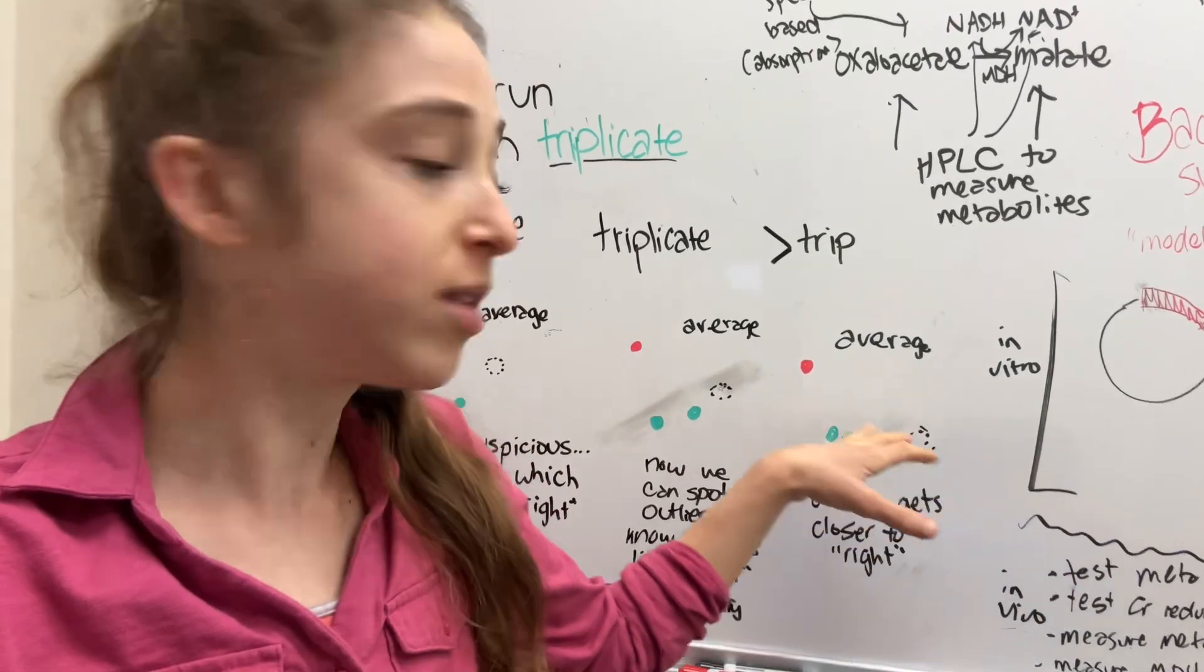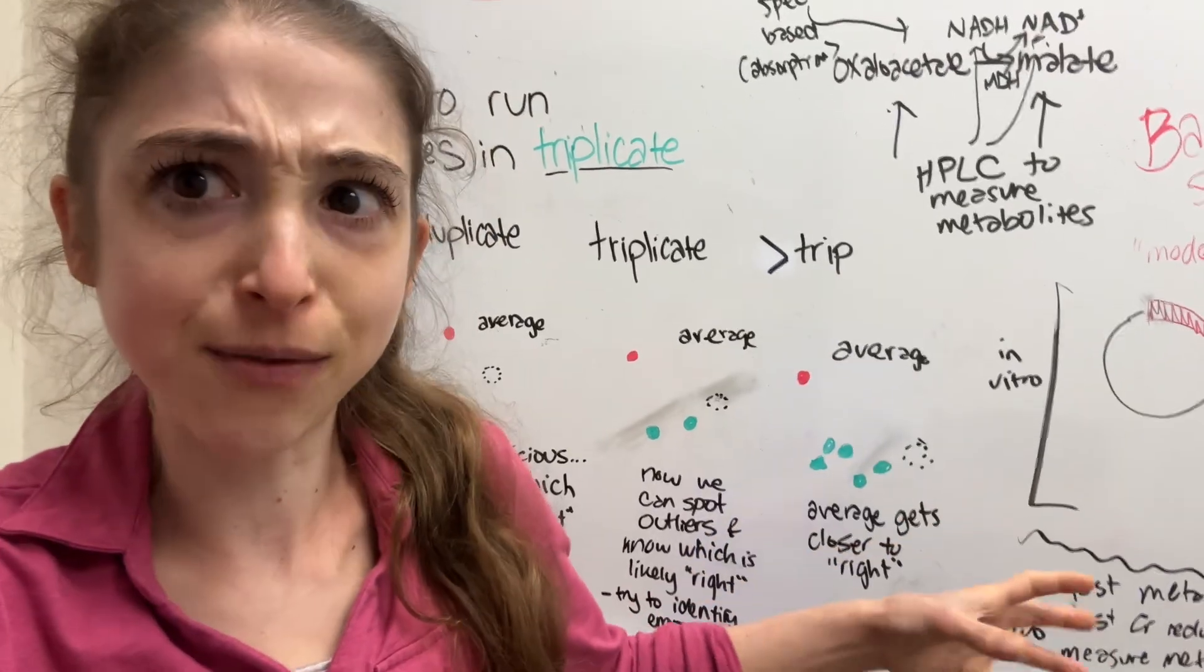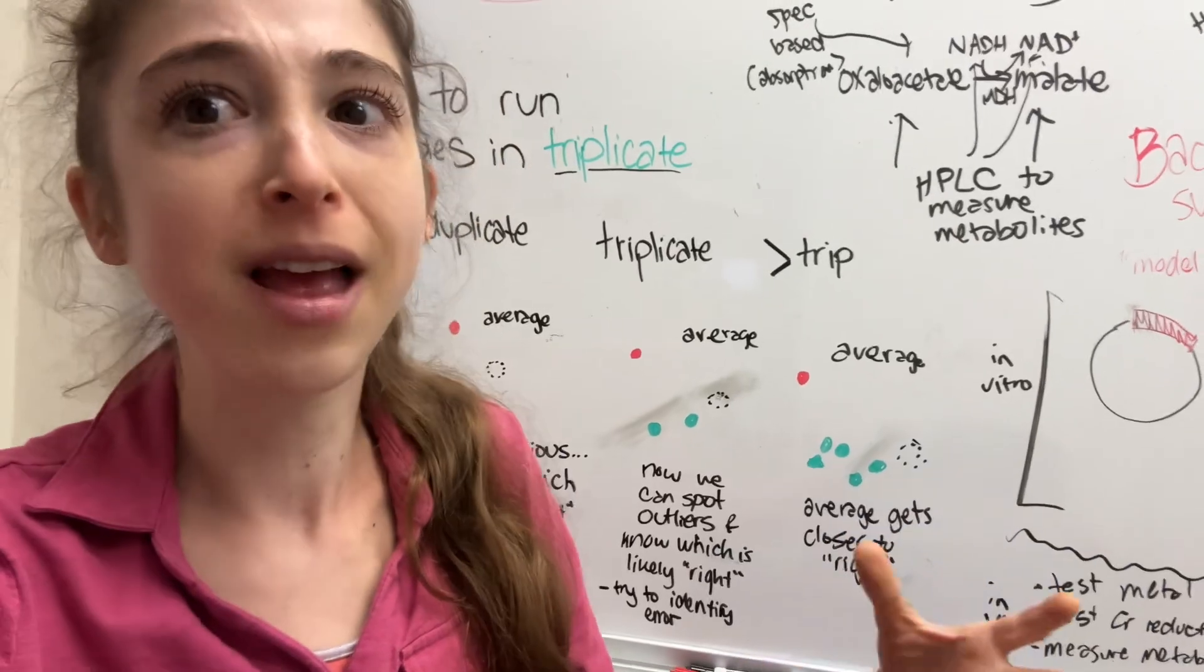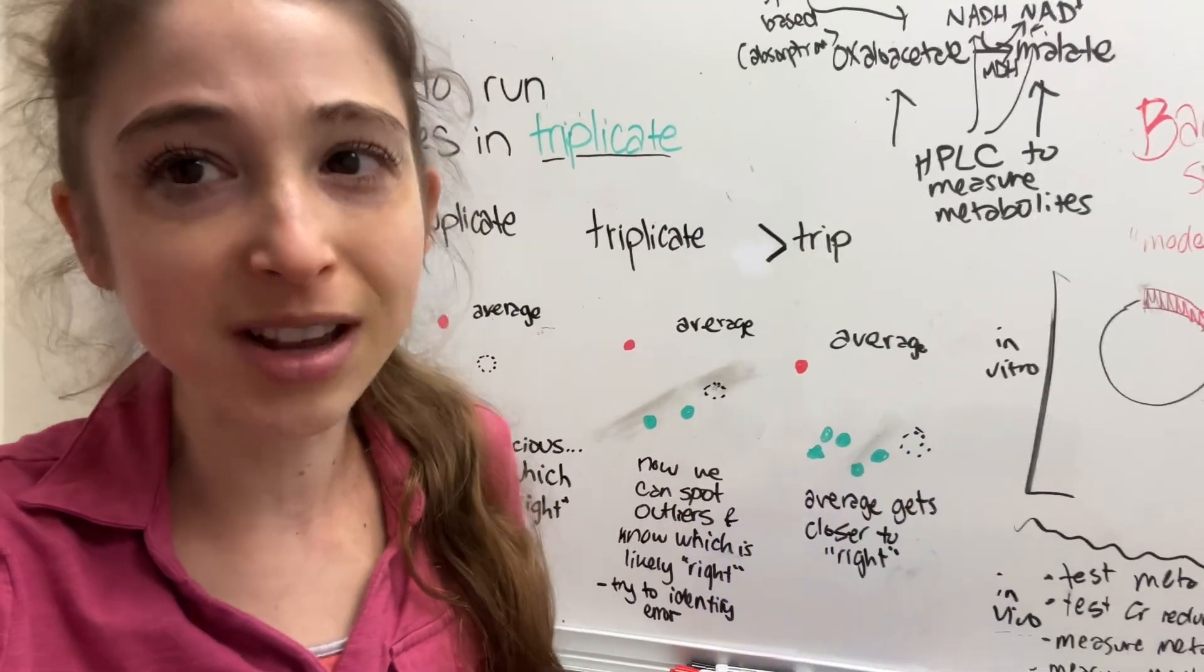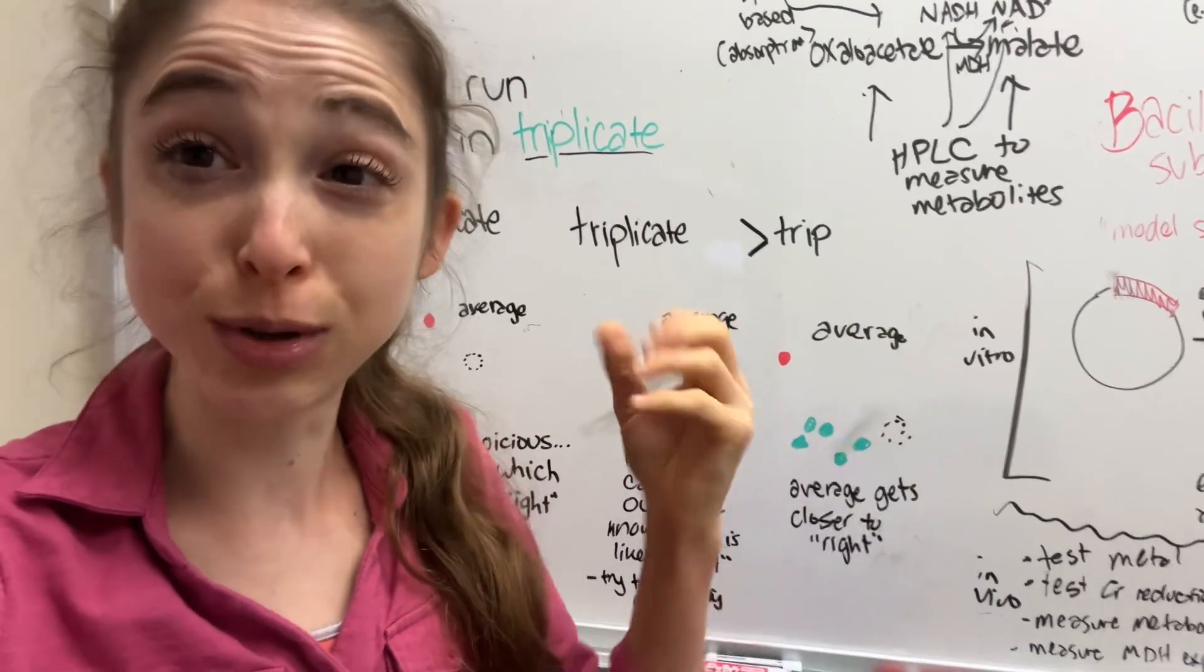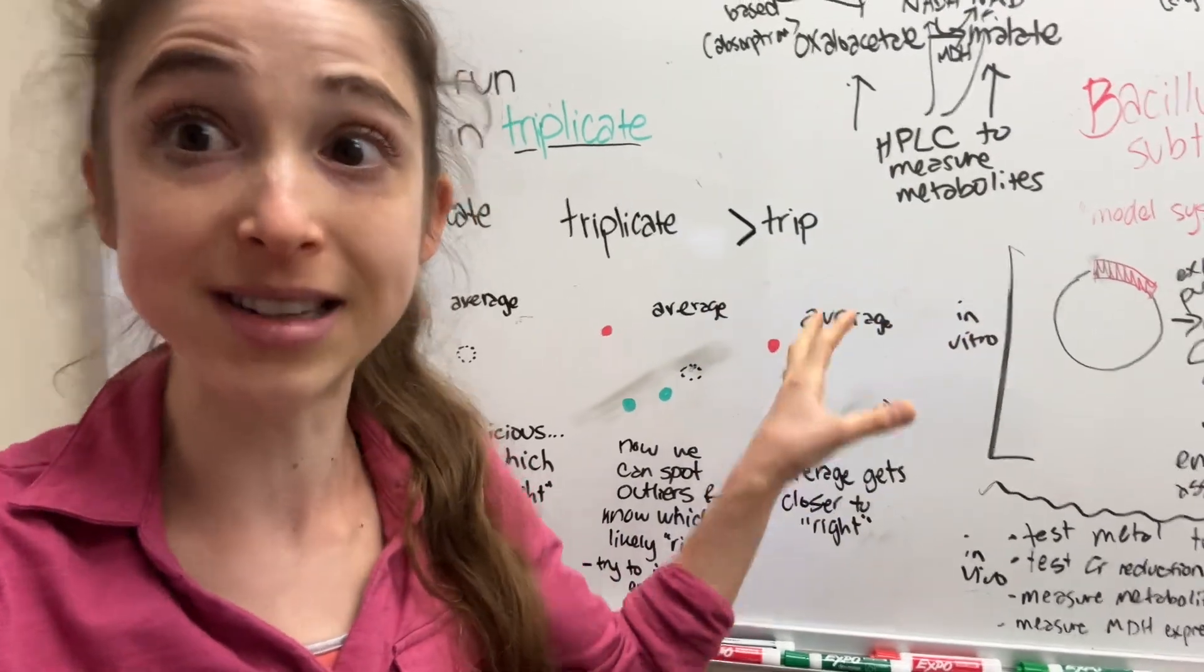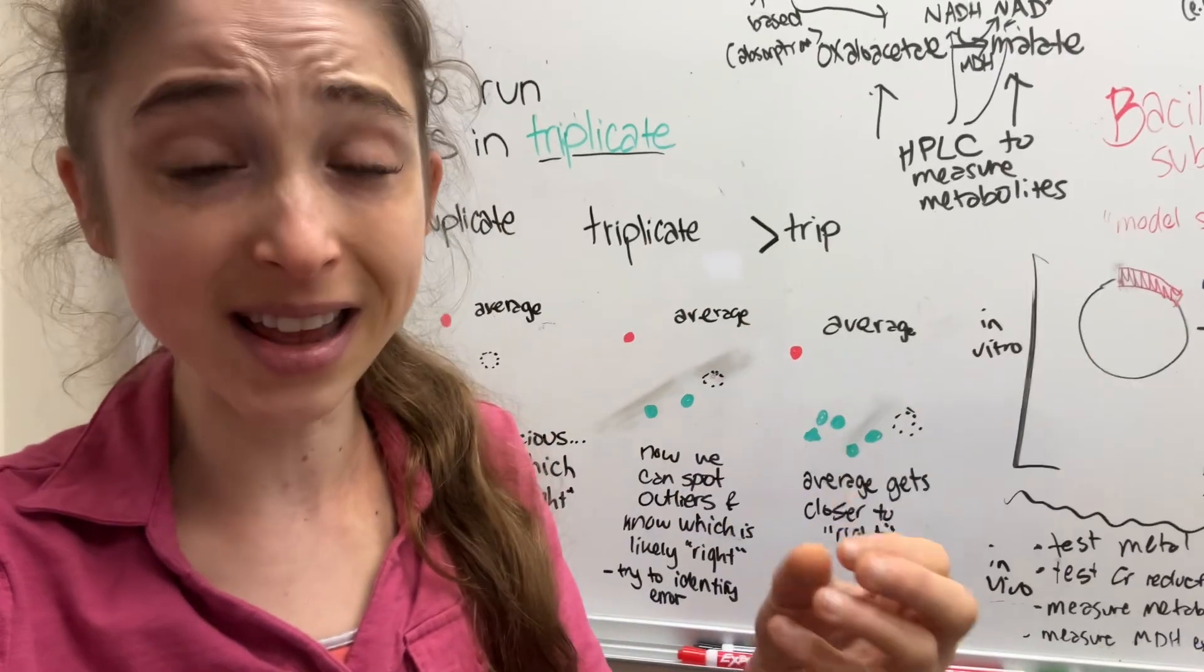And so if you did experiments on two different days, and you did one experiment on one day and then five on another day, the five on that other day might cluster together apart from the one on the other day. And that wouldn't really be telling you confidently that the five you did on that one day were correct. It could be that you did all of those wrong. And so that's why it's really best to do the same experiment on multiple days with replicates in each of those days, then you can spot error in that day and between the days.